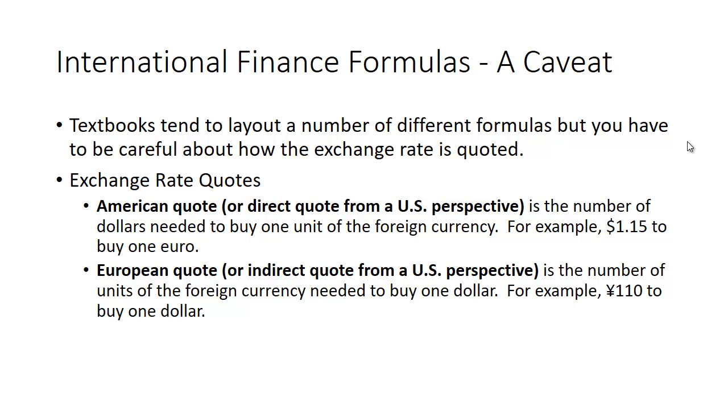For example, there are two ways to quote exchange rates. There's the American quote, or oftentimes known as the direct quote from a U.S. perspective, and that's the number of dollars needed to buy one unit of the foreign currency. So for example, $1.15 to buy one euro.